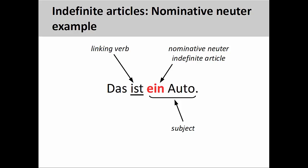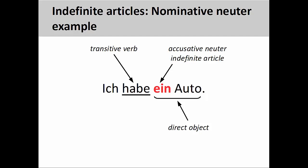By looking at the verb, however, you can guess whether the neuter indefinite article is nominative or accusative. Here, the linking verb indicates that Auto is a predicate noun and ein must be in the nominative case. And here, the transitive verb indicates that Auto is a direct object and ein must be in the accusative case.